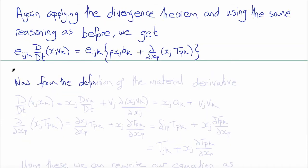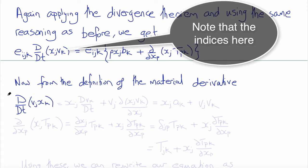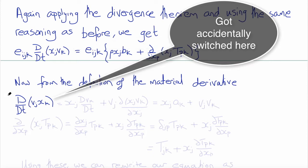Now, from the definition of the material derivative, we can write that the material derivative with respect to time of XJ VK will be XK times the material derivative of VJ,